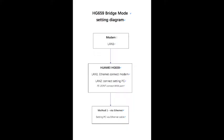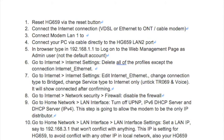HG659 bridge mode setting diagram: connect the cable between the modem LAN 1 port and the HG659 LAN 1 port. Don't plug in the HG659 WAN port — that will not work in bridge mode. Reset the HG659 via the reset button.